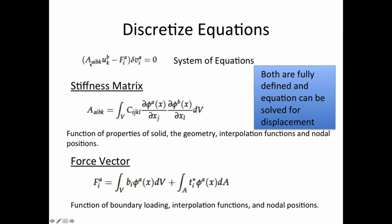I jumped straight from the governing equations - the strong form - to the discretized system. I end up with the same form as before: the stiffness matrix A multiplied by displacement equals the force vector. The stiffness matrix is a function of the solid material properties - this constitutive relationship - the geometry, interpolation functions, and nodal positions. The phi's are the basis functions, and since I'm using Galerkin FEM, the weighting and basis functions are the same.